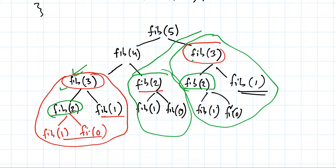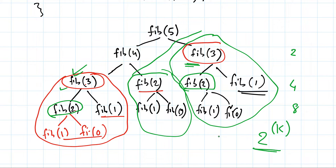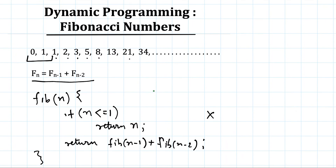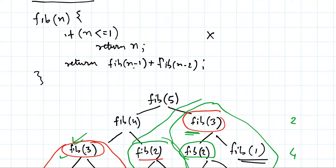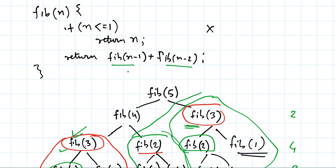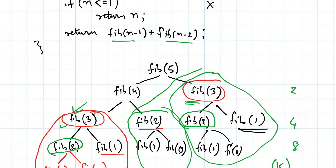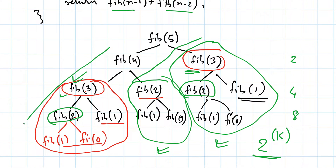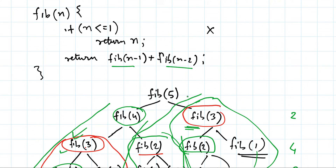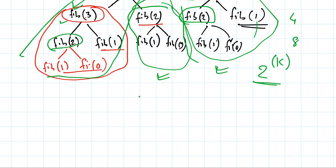If we don't save these values we will have to redo them again. At the second level we have two nodes, then four nodes, then eight nodes — so at the kth level we have 2^k nodes. For calculating Fib(5), it calls Fib(4) plus Fib(3), and since Fib(4) has not been calculated yet, it makes a series of recursive calls, then recalculates many things that were already computed. So the time taken is exponential. How can we optimize this?